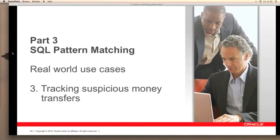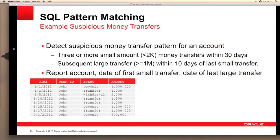Now let's look at our final real-world use case, which is about tracking suspicious money transfers. Many companies are looking for simple and more efficient ways to identify and track fraud. The ability to search for suspicious financial patterns is becoming a primary requirement, and Oracle SQL pattern matching is the perfect in-database SQL method for doing this as it offers fast and efficient processing. The richness of this SQL feature allows developers to define unusual and suspect patterns of behavior that are unique to their industry or particular circumstances.